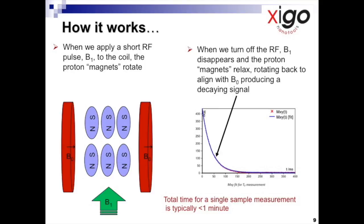The proton magnets now rotate and realign with this new field that, in the acorn area, is 90 degrees to the original static field, a process that takes a few microseconds.